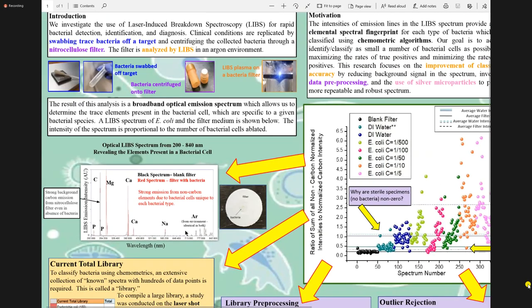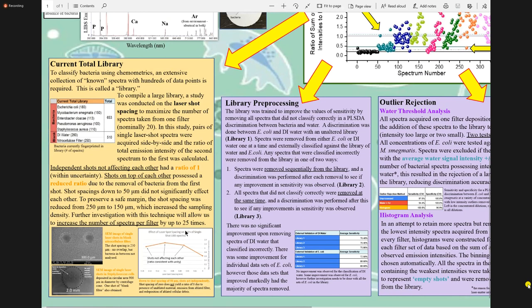Moving over to this orange box here, currently to externally classify bacteria we use a library of spectra that are similar to what we are trying to identify. This is what we call our current total library which contains five species of bacteria and two control samples totalling to over 1,000 spectra in our library. To increase our library size at a faster rate we increase the sampling density per filter. To do that, we decrease the spacing between the laser craters from 250 to 150 micrometers which not only gave us more shots per filter but also better utilize the bacteria on that filter. At the bottom of that yellow box we show two SEM images and these depict the laser craters and the spacing between them.